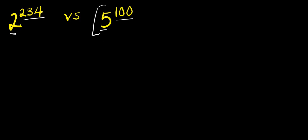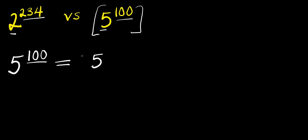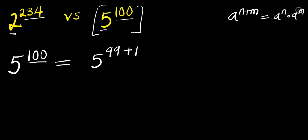Let's start with 5 to the power of 100. We can express the exponent as 99 plus 1. Now if you have a power of n plus m, this equals a^n times a^m. So from here we have 5 to the power of 100 equals 5 to the power of 99 times 5 to the power of 1.